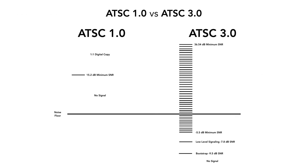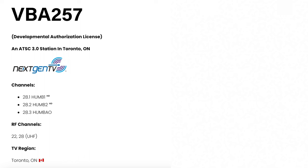Most ATSC 3.0 stations at the moment are not being implemented anywhere near that low of an SNR. Most are trying to mimic ATSC 1.0's minimum SNR, maybe a little bit below or above that, which is why some people say ATSC 3.0 has improved their reception. But there was an ATSC 3.0 broadcast for a period of time being sent out at a two decibel minimum SNR — two decibels above the noise floor. That station was VBA 257, the test ATSC 3.0 transmission from Toronto, Ontario, Canada.